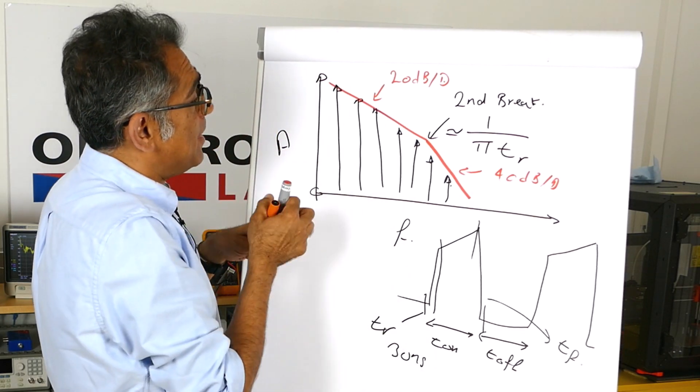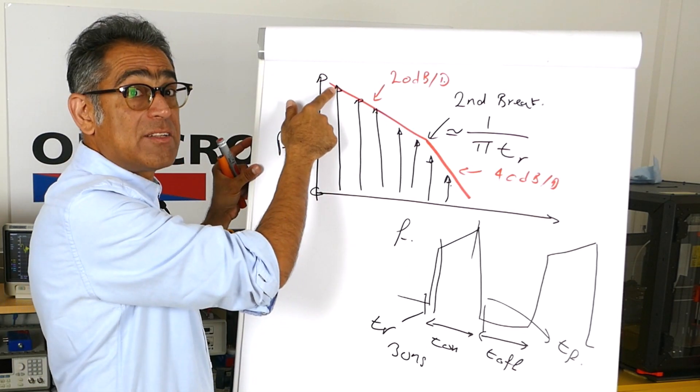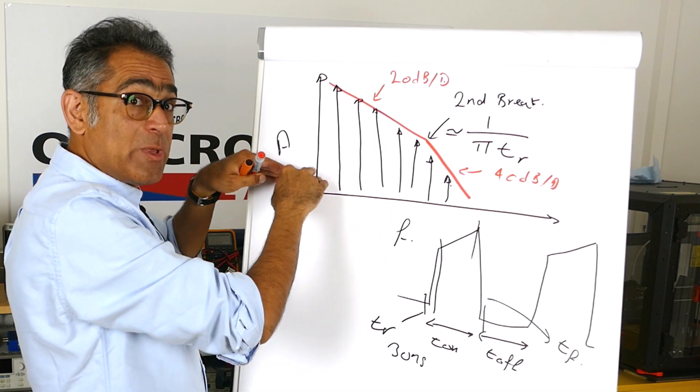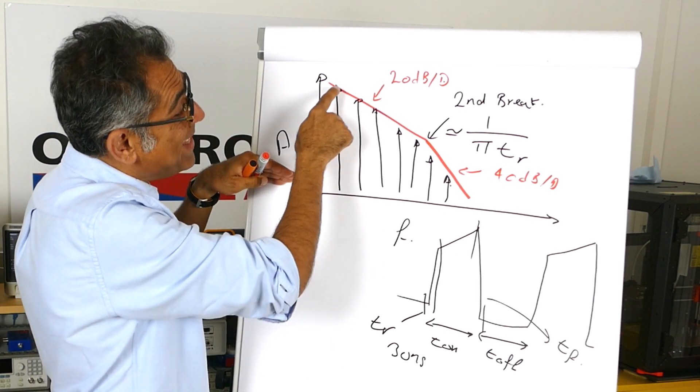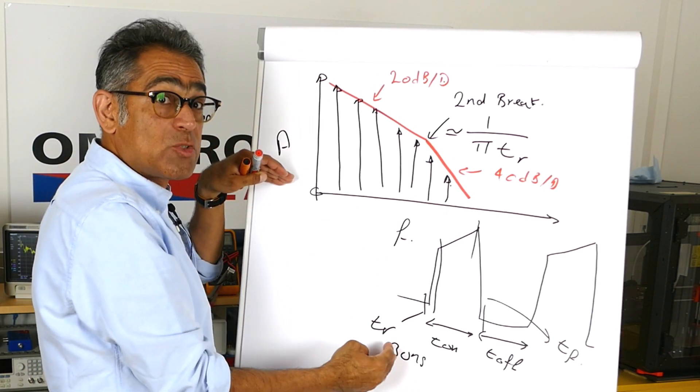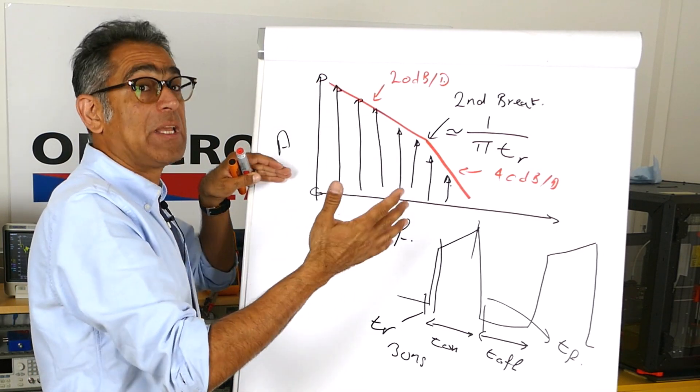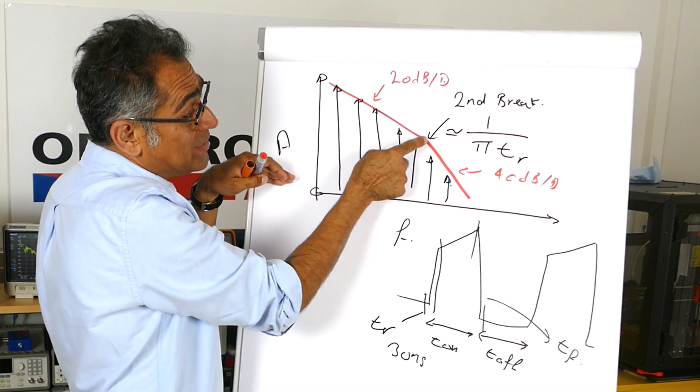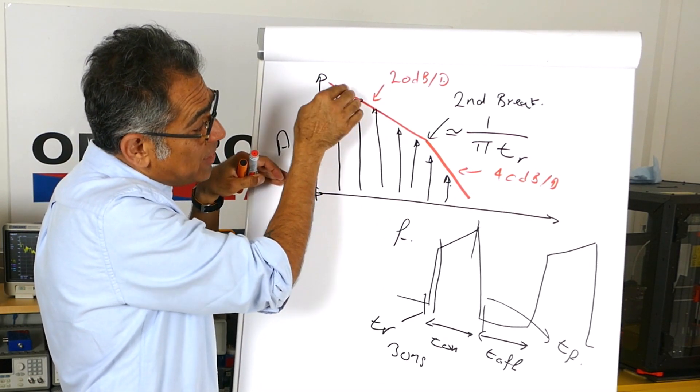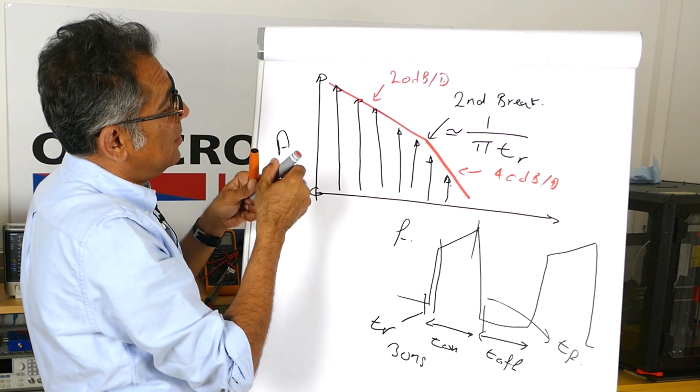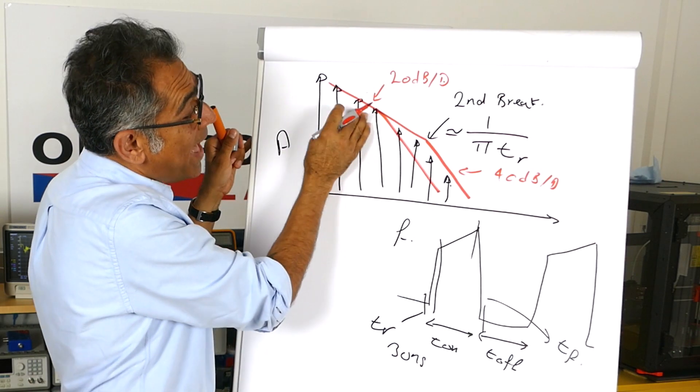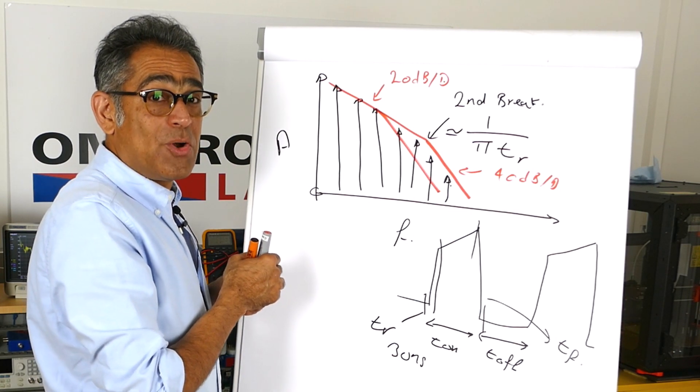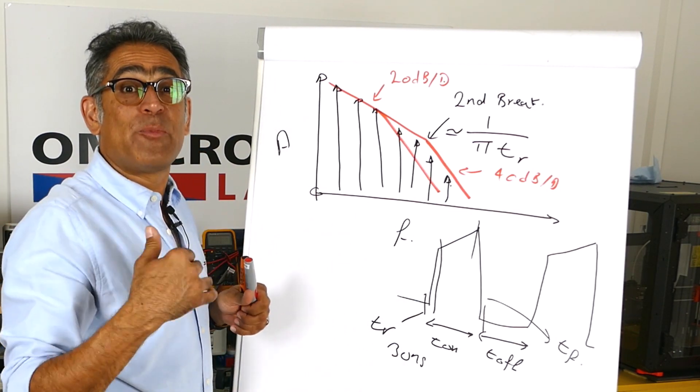The point is, if you're trying to pass the EMC test, what we normally try to do is take our fundamental, which is the highest component, the biggest component, and push that down with our filter. Now if we push that down with the filter, naturally the rest of them will go down as well. So if we manage to pass the first one, typically we hope to pass the rest of them. And if I push this second break further up, then the natural decay becomes so much faster. And it will disappear on the spectrum analyzer, and therefore I will pass my EMC better. So we are now going to go to the lab and we're going to show this in real life.